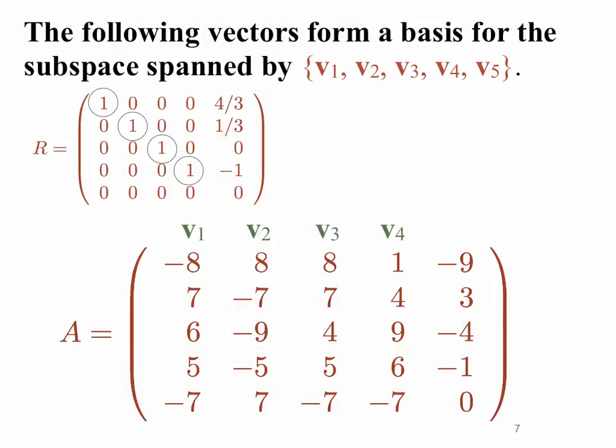And so in practice, what we would have done is once we put this into reduced row echelon form, every column that has a leading one actually points to a vector in the columns of A that are linearly independent. So in this particular case, the first four columns of our reduced row echelon matrix A, which I was calling R, have leading ones. So that means that vectors V1 to V4 are linearly independent.